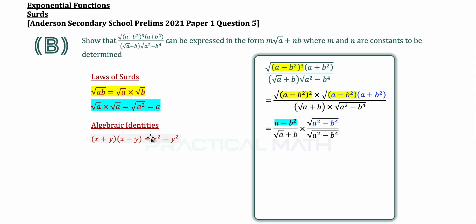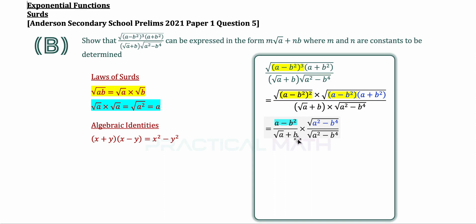This special algebraic identity is used very frequently, whether for conjugate roots or rationalization of the denominator. In the next step, the term root of (a squared minus b to the power of 4) appears in both the numerator and denominator of the fraction and can therefore be cancelled, leaving us with a simplified fraction that still has root a plus b at the bottom.